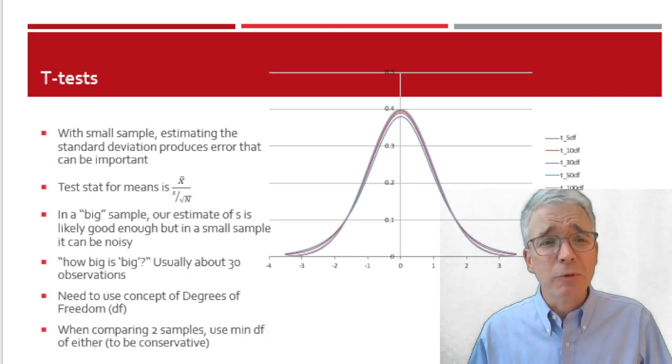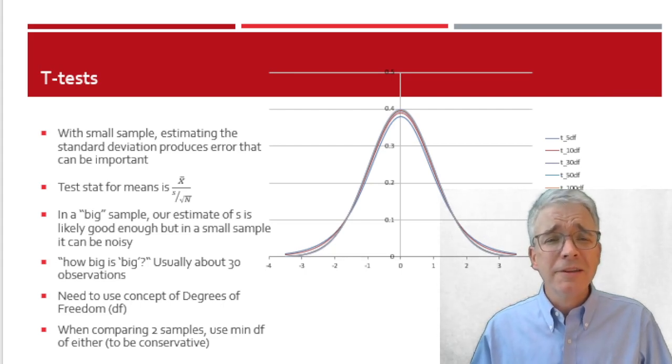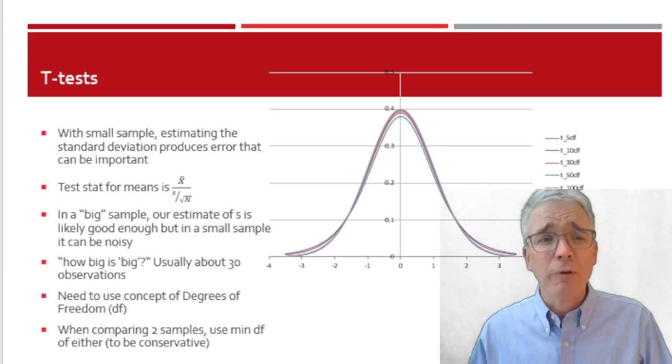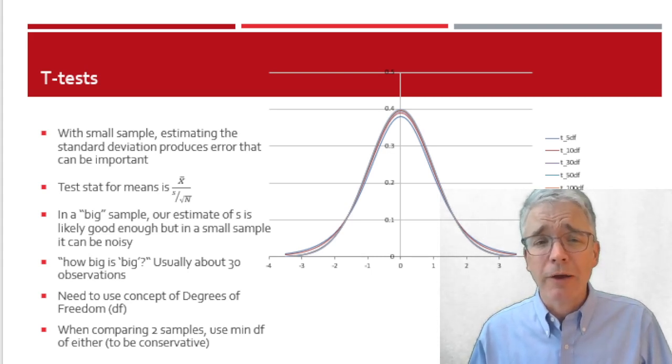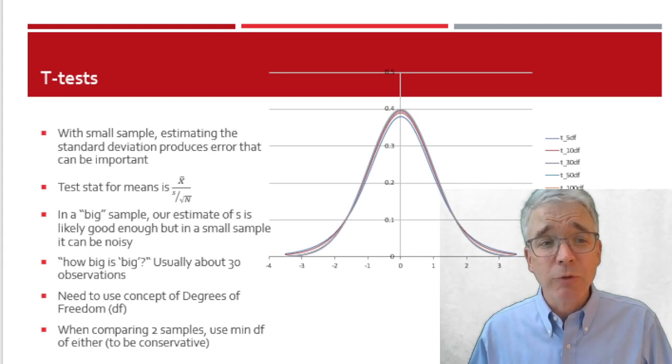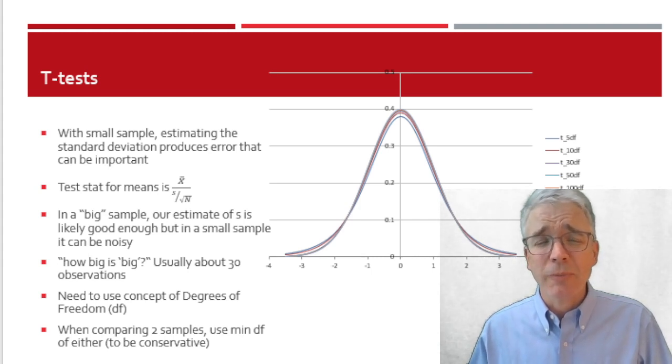The final detail about doing hypothesis tests is with a small sample. Our test statistic for a mean is going to be x-bar divided by s over the square root of n, where I'm estimating s. In a large sample, that estimate of s is going to be good enough. I don't have to worry about it. But in a small sample, I have to worry about that additional variation from that estimate as well.